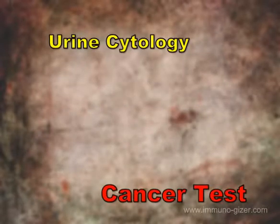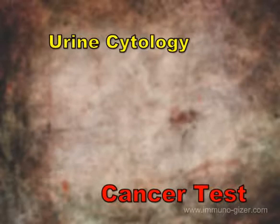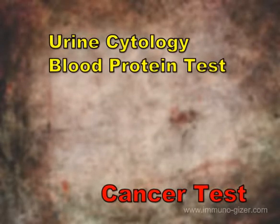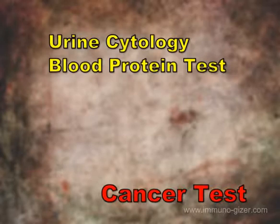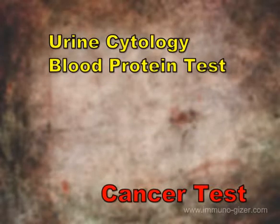Urine cytology: examining a urine sample under a microscope may reveal cancer cells that could come from the bladder, ureters, or kidneys. Blood protein testing: a test to examine various proteins in your blood can aid in detecting certain abnormal immune system proteins — immunoglobulins — that are sometimes elevated in people with multiple myeloma. Other tests, such as a bone marrow biopsy, are used to confirm a suspected diagnosis.